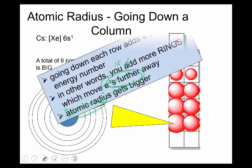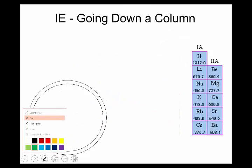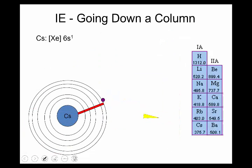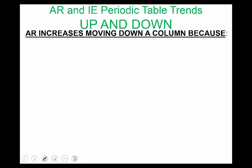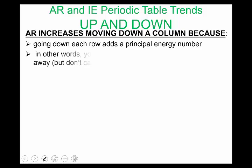So here I have this in writing, so going up and down a column. I kind of explained IE already. So you'll see the electron is further away, so it should be easier to pull them off. And we see this with these numbers here, so this again is in kilojoules per mole.